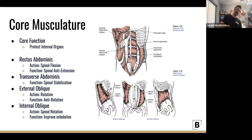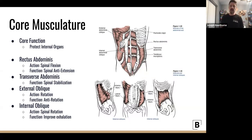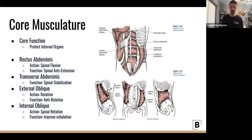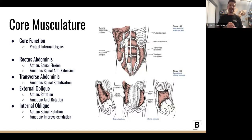The transverse abdominis wraps around the sides, creating a tight barrier that ensures rotation and keeps us stable through the spine during rotation. The name 'transverse' reflects the transverse plane — that's their goal: allowing movement while maintaining extreme spinal stability through rotation.